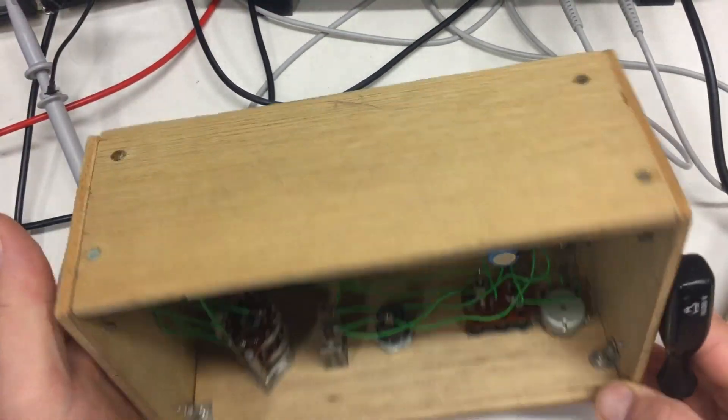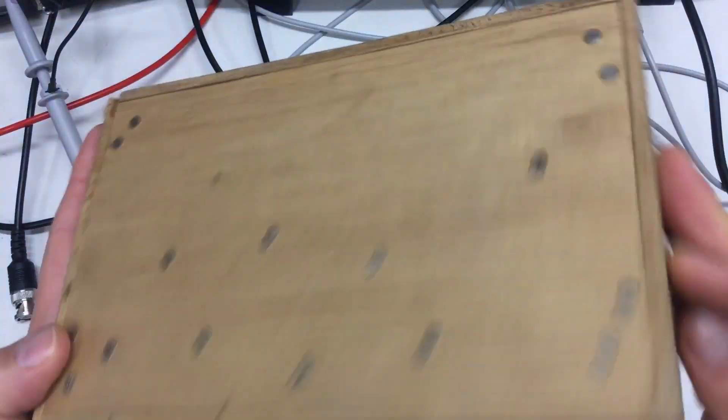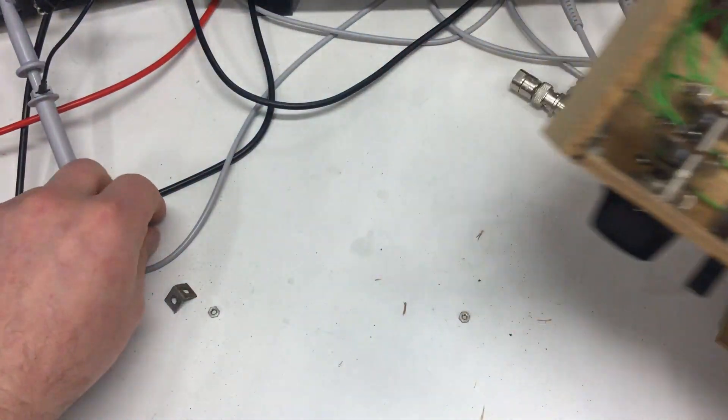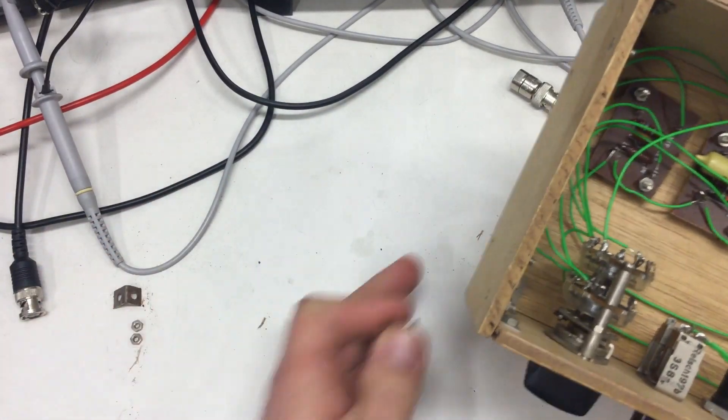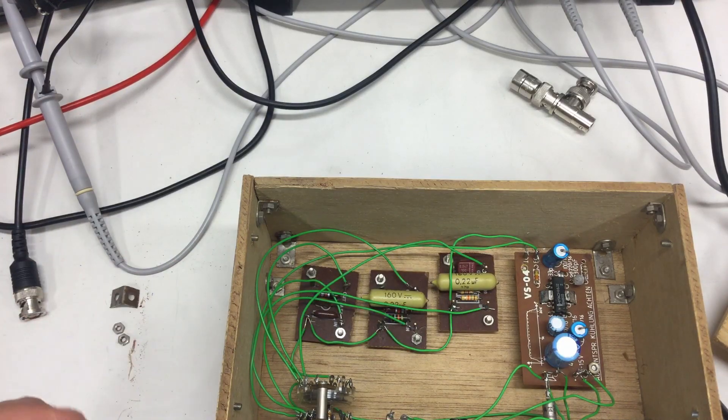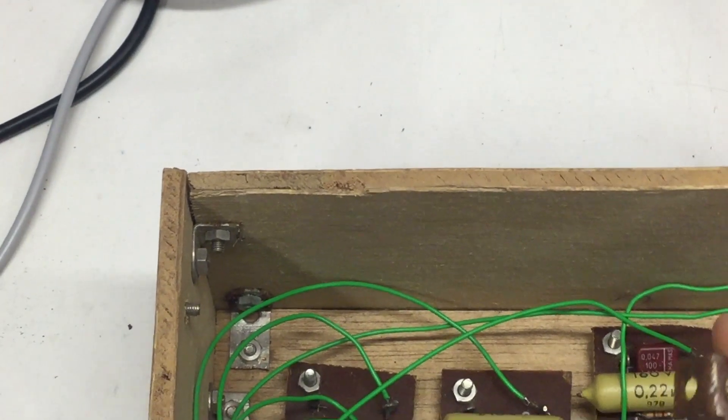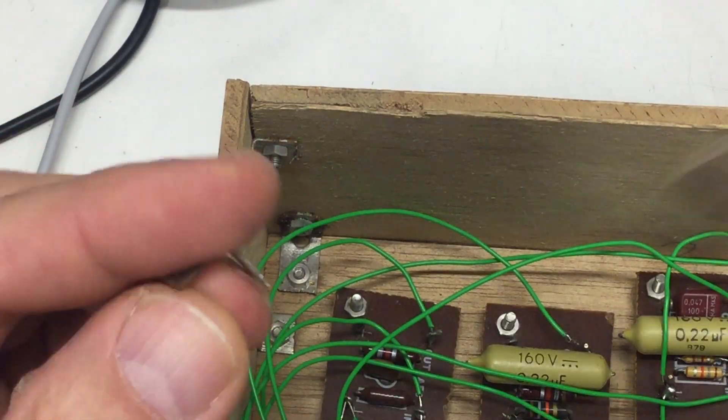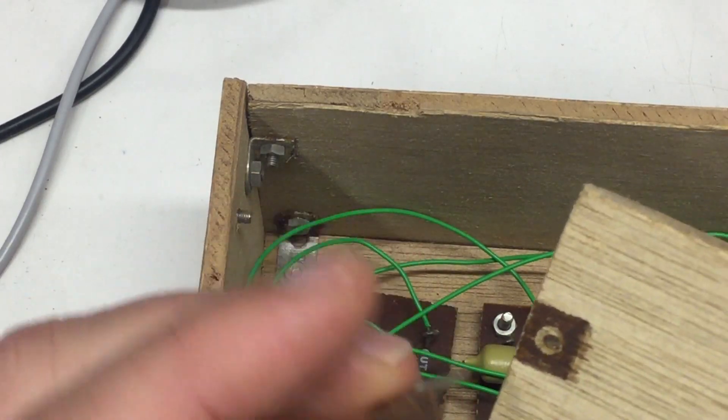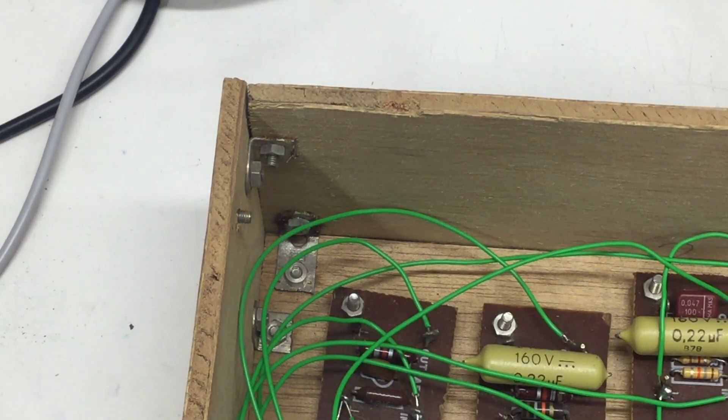They were held in by some brackets. Lots of dirt in here. This particular one is a little bit rusty. Let me zoom down again. They were held in by some brackets and that was then held to the wood with a little nut. Inside we find something interesting.